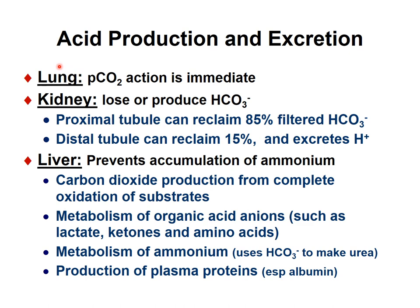The lung affects PCO2 and eliminates CO2 immediately from arterial and venous blood. The kidney filtrates and produces bicarbonate — every bicarbonate molecule is filtrated, 85% is reabsorbed in the proximal tubules, and an additional 50% can be reclaimed in the distal tubules together with excretion of hydrogen. The liver prevents accumulation of ammonium and produces CO2 from oxidation of substrates.